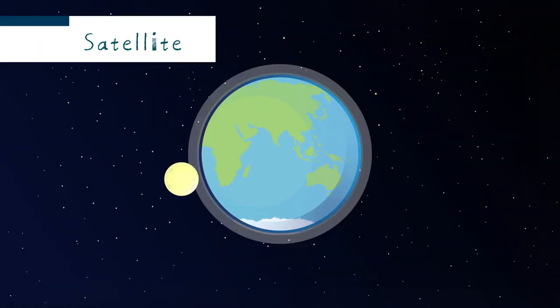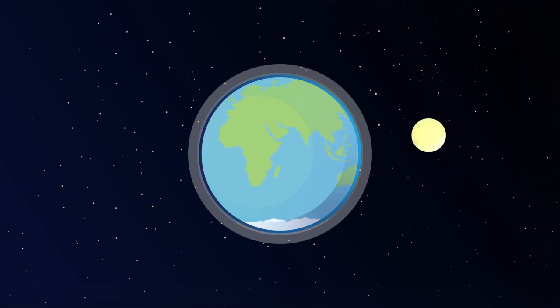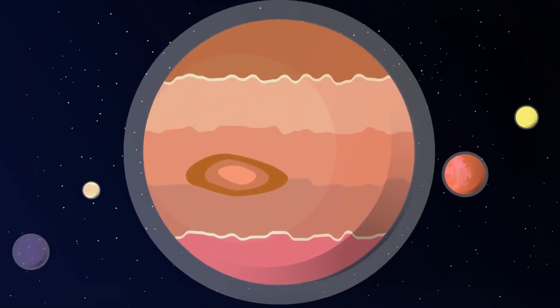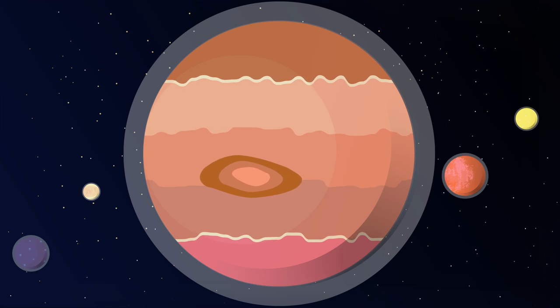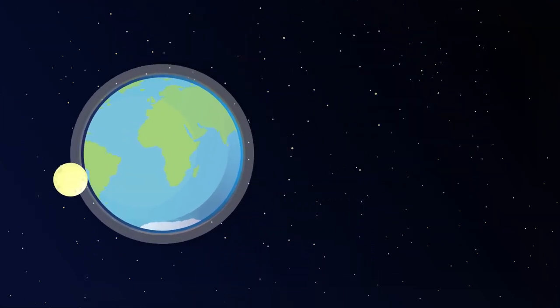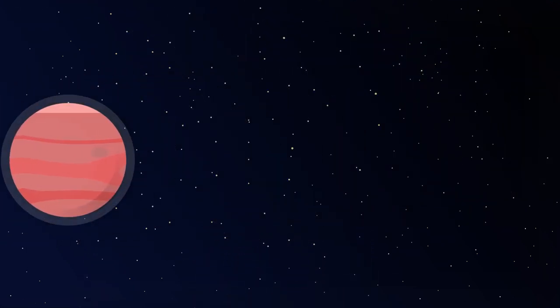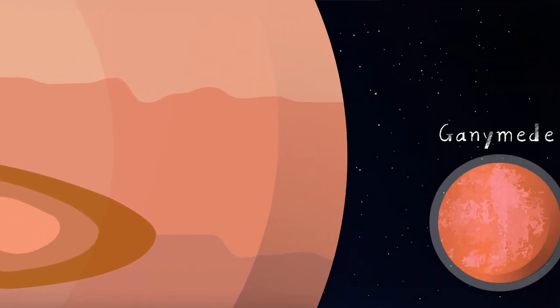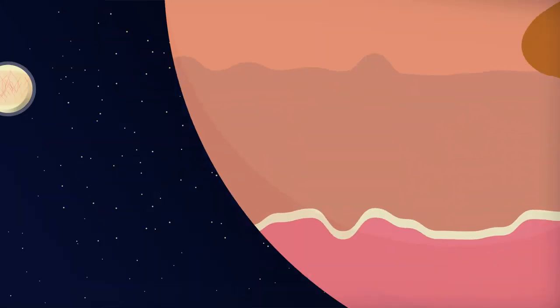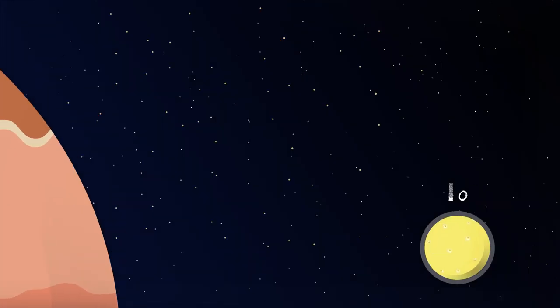A satellite is a celestial body that orbits a planet within a defined period of time. Jovian planets have more satellites than terrestrial planets. The Moon is a satellite of Earth. The satellites of Jupiter are, from largest to smallest, Ganymede, Callisto, Io, and Europa.